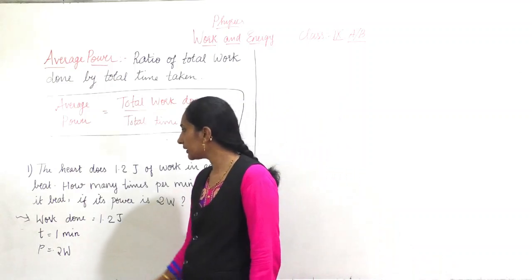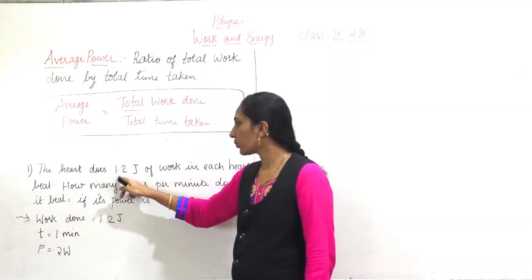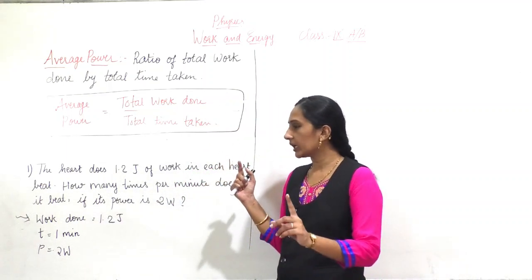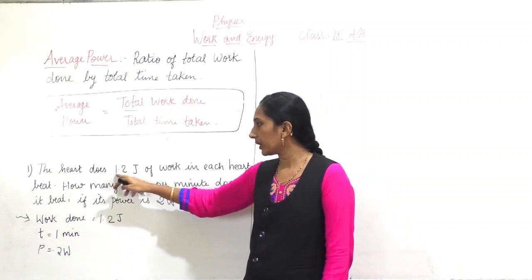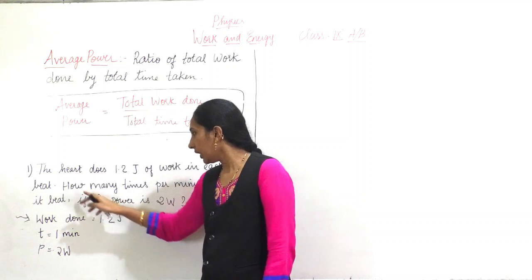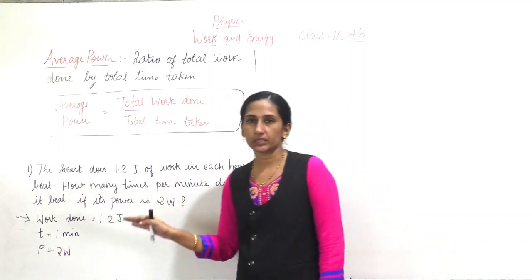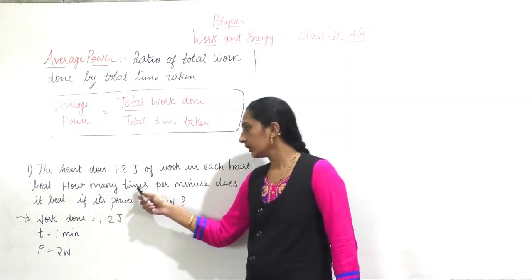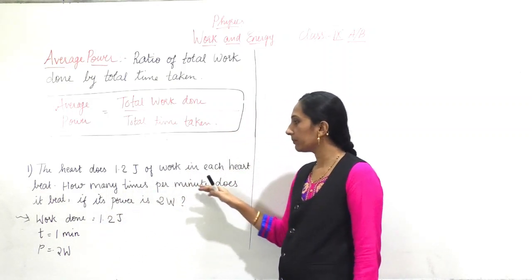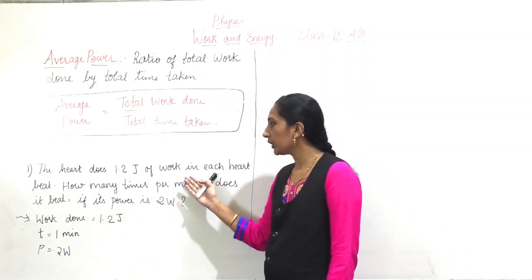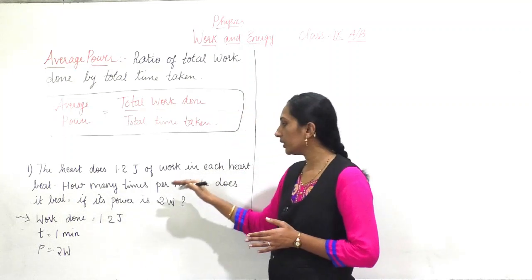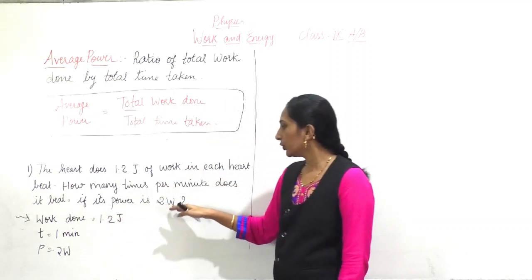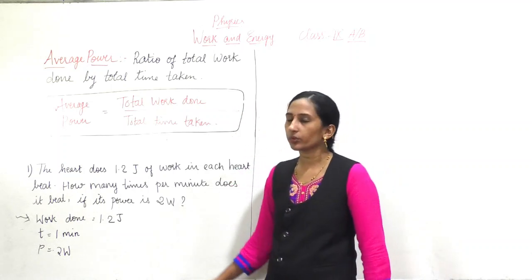Now we are going to see a problem. The heart does 1.2 joules of work in each heartbeat. Listen to the problem carefully. For one heartbeat, the work done is 1.2 joules. We have to find how many times per minute it beats. For that you have to find the total work done, and then only you can find the total time taken. If its power is 2 watts — the power given is 2 watts.